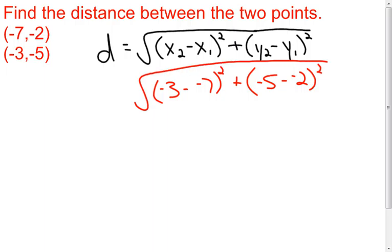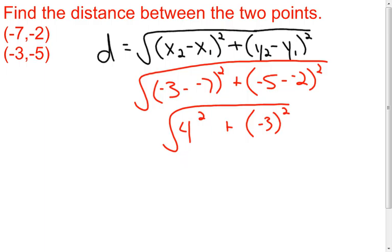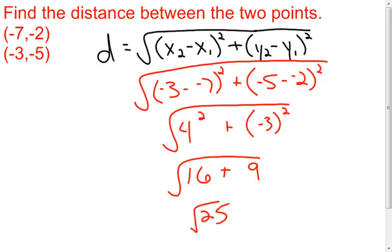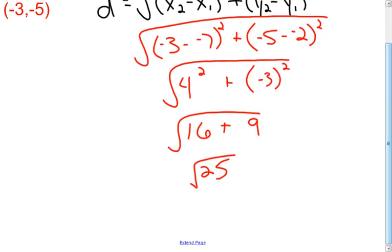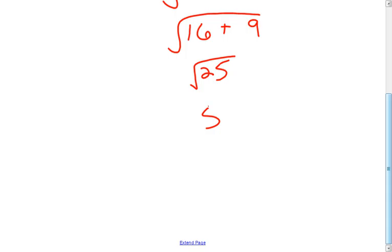I've watched many students forget to put that on and they end up with the wrong answer. Subtract these — we end up with 4, square it. Subtract these — we end up with negative 3, square it. Take the square root. We end up with 16 and 9. Add them together, we get 25, and the square root of that gives us a distance of 5 units between our two points.